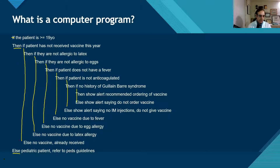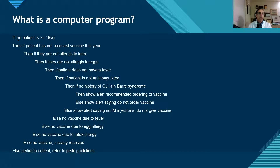Going through this logic: we start by asking if the patient is greater than or equal to 19 years old. If they are, we go on to the next question; otherwise, we assume this is a pediatric patient and refer to the PEDS guidelines. Next, if the patient has not received the vaccine this year, we proceed to the next step; if they've already received it, we don't suggest giving it again. If there is no latex allergy, we move to the next question; otherwise, we ensure we can provide a latex-free alternative.